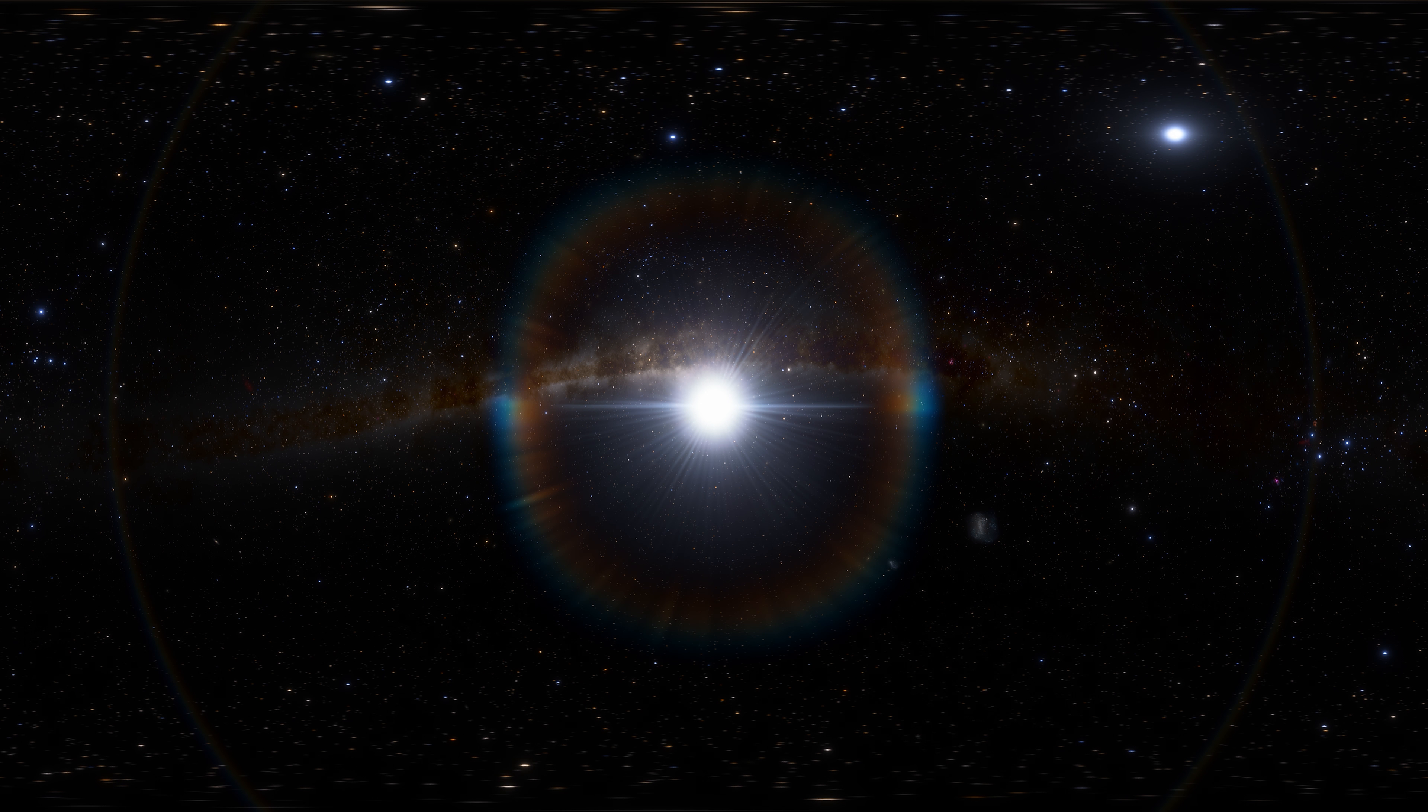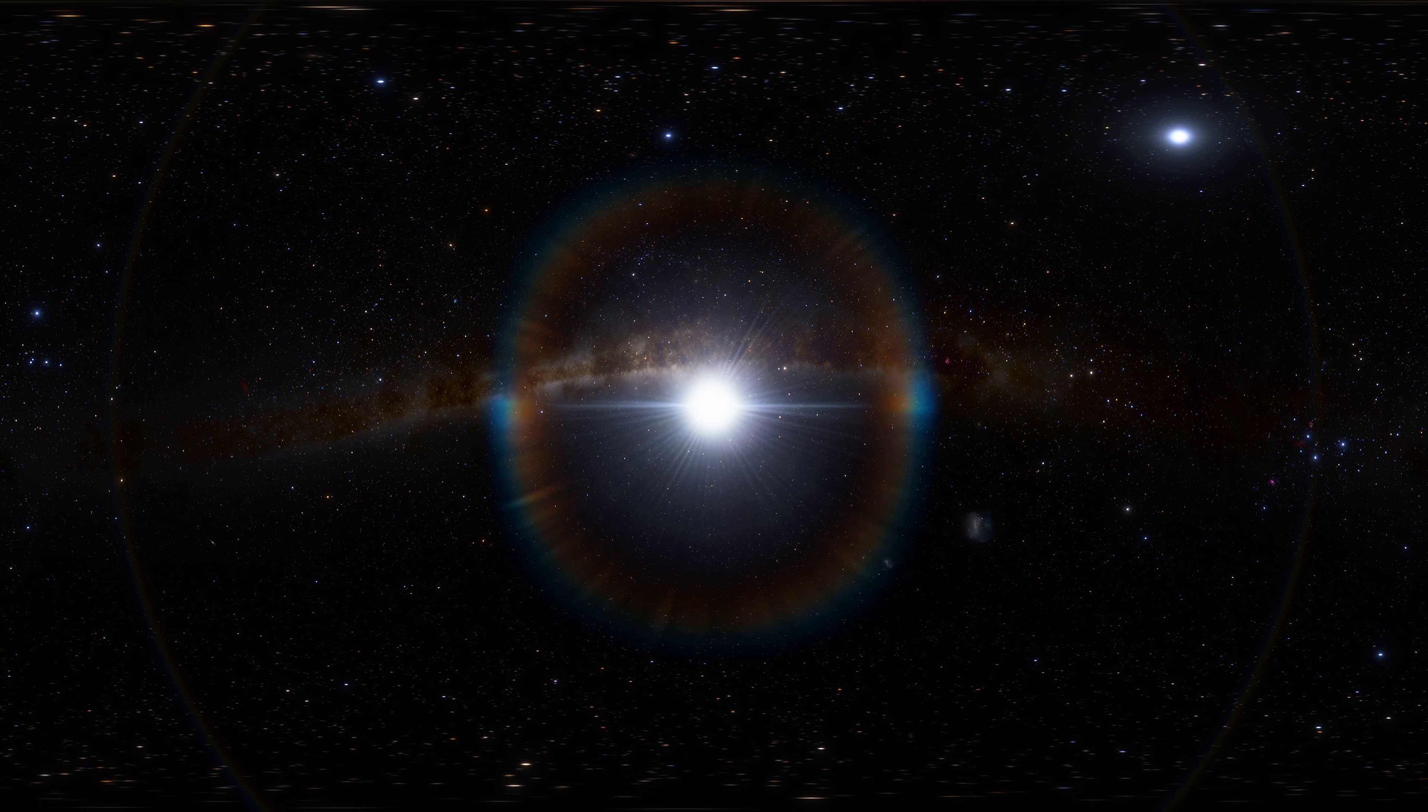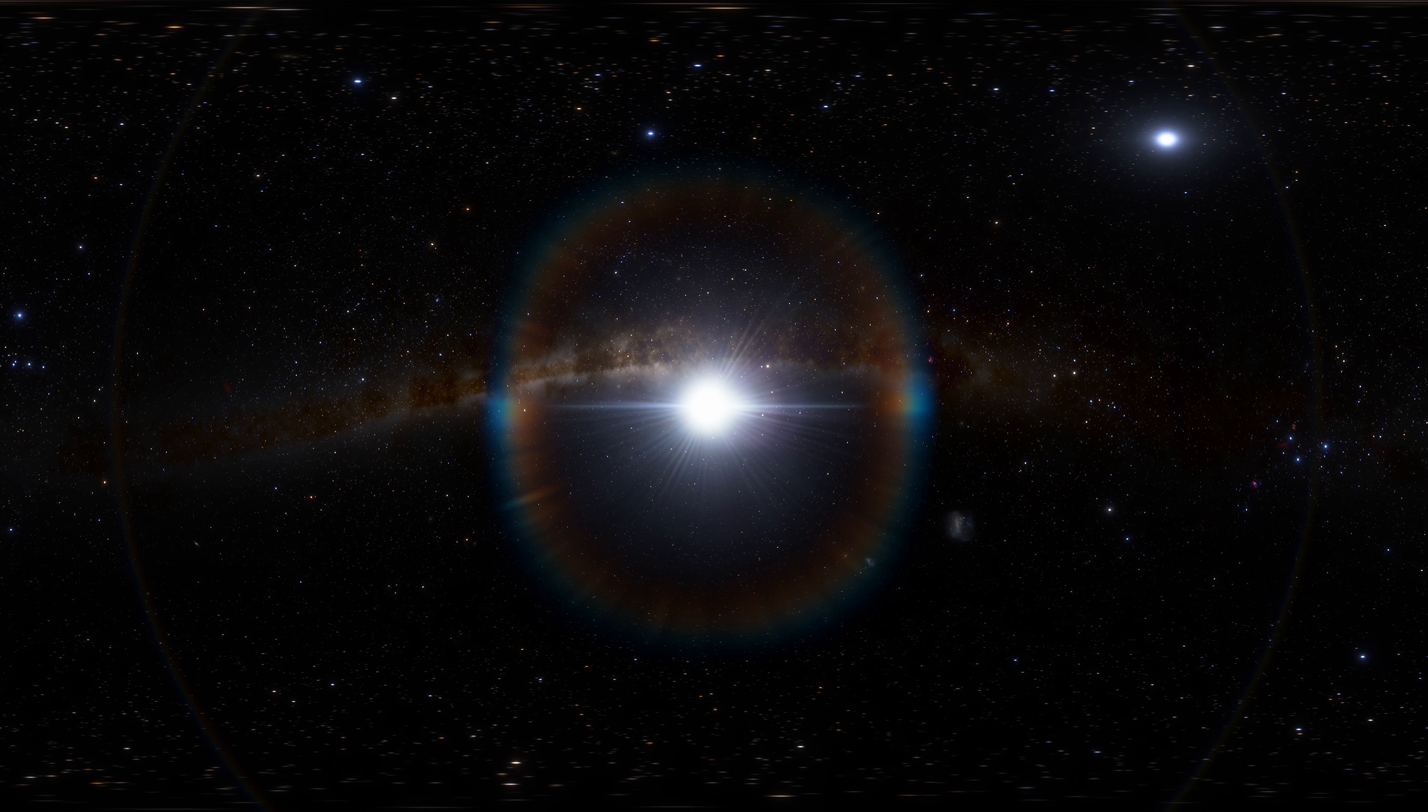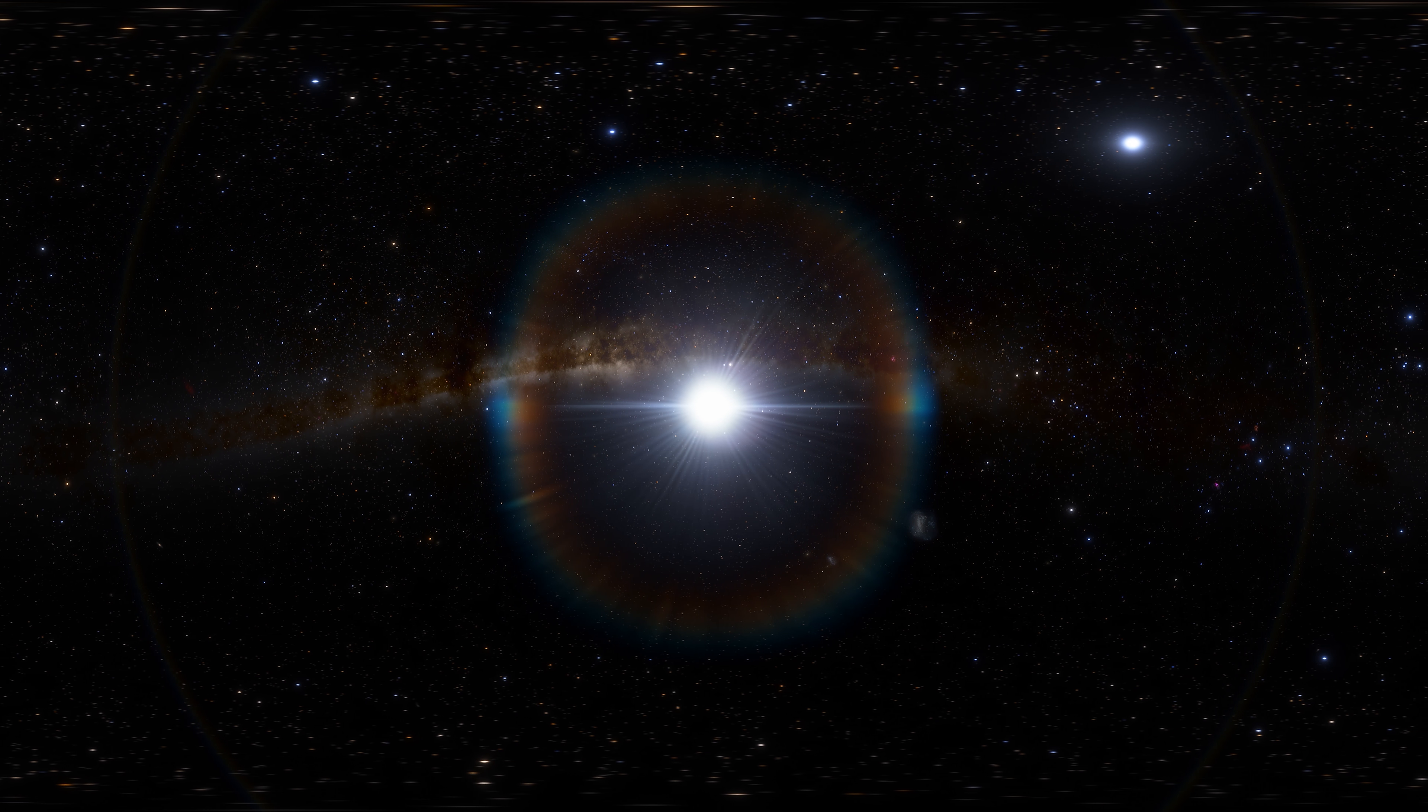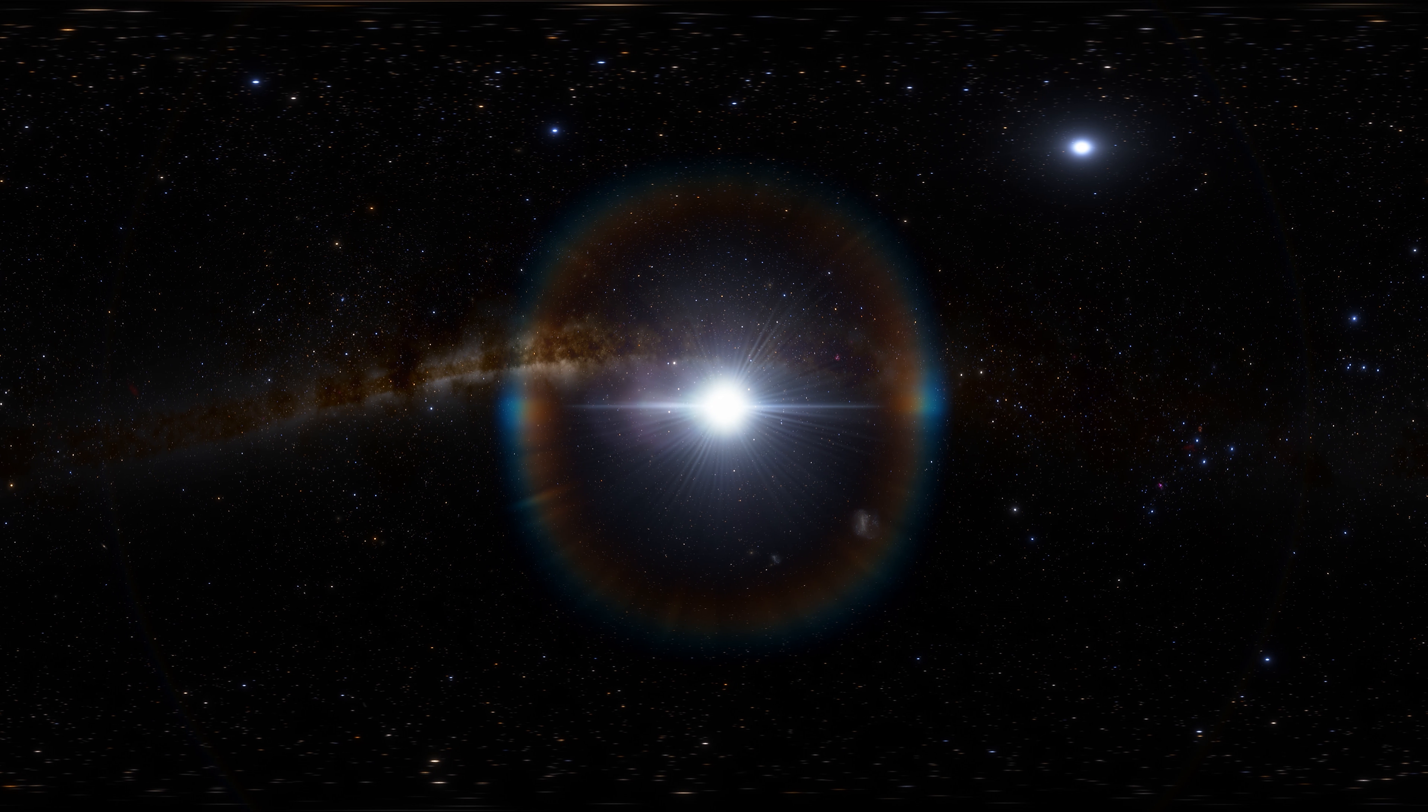Rigel B is a binary star placed about 2,200 astronomical units away from Rigel A. Rigel varies slightly in brightness, its magnitude ranging from 0.05 to 0.18.